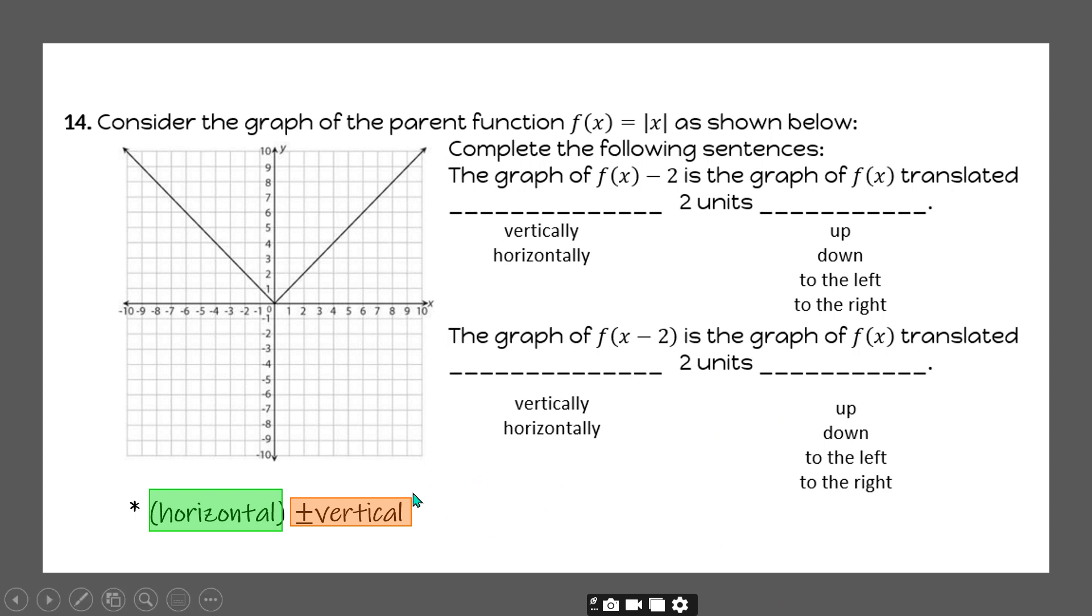Outside the parentheses is vertical. So we now have to compare this function f(x)-2 to the parent function. The -2 is outside the parentheses, so it's going to be a vertical change. It's changing vertically. And because it's a -2, it's going to be going down 2 units.